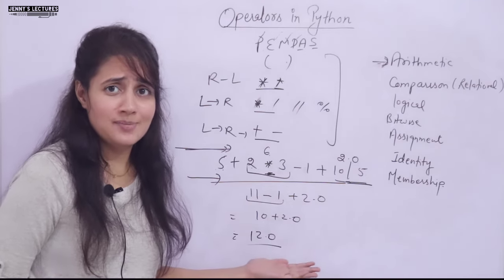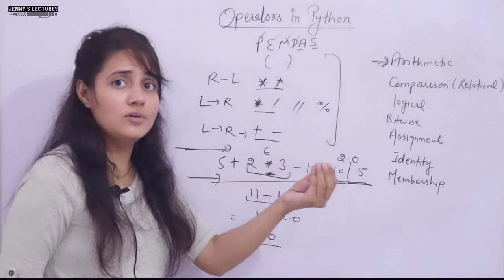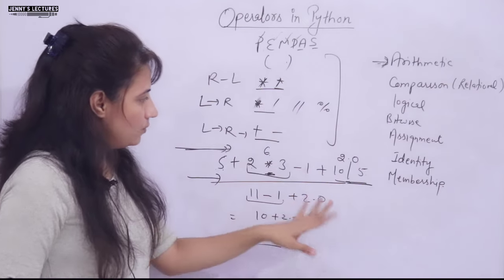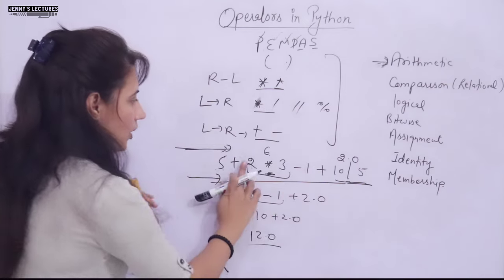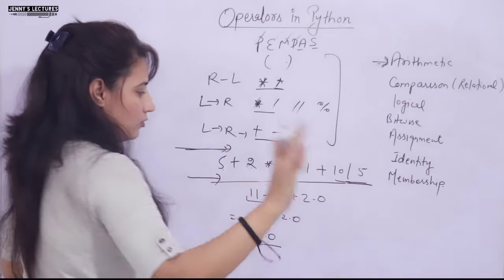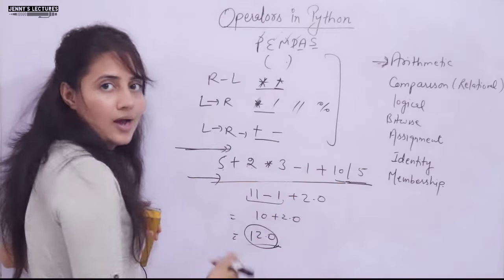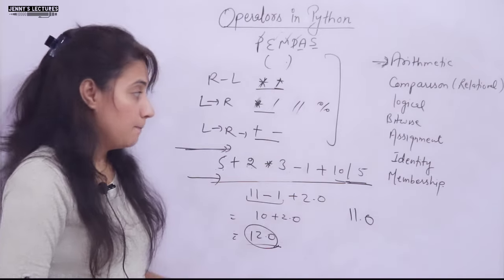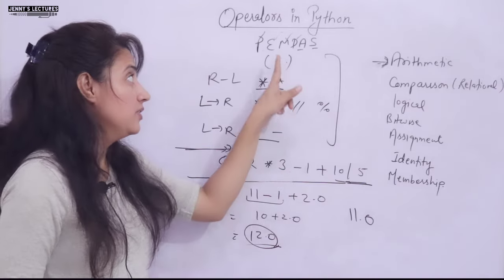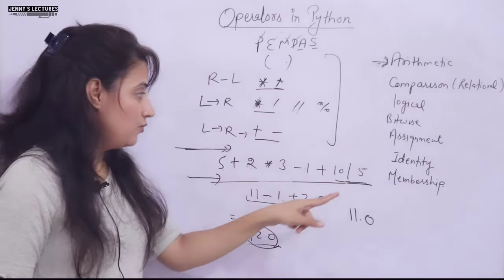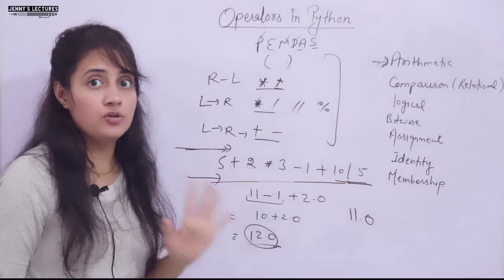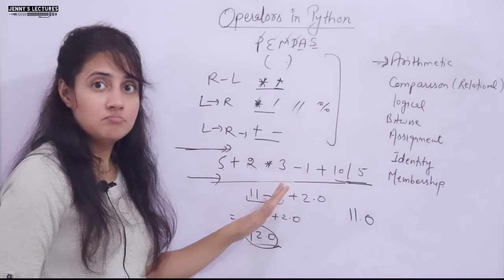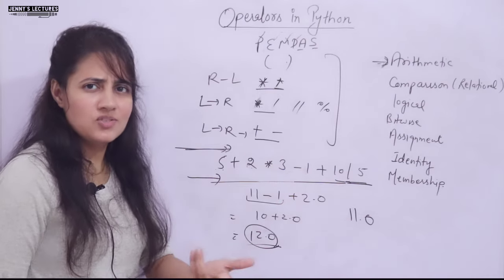These arithmetic operators are quite simple. The only new ones are floor division and exponent. As an exercise, try modifying the expression using parentheses — since parentheses have the highest precedence — so that the answer becomes 11.0 instead of 12.0.